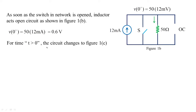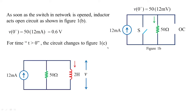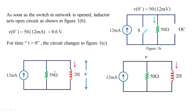For time t greater than 0, the circuit changes to figure 1c: 12 milliamperes supplies both the 50 ohm resistor and the 2 Henry inductor, and current will now flow in the 2 Henry inductor. I can redraw this as a parallel circuit with a common node voltage v applied to all three elements — the current source, 50 ohms, and 2 Henrys. I hope you have understood how the circuit has been derived for t greater than 0.